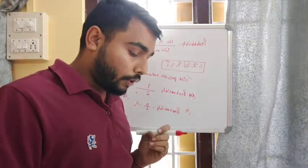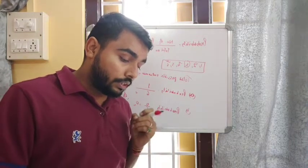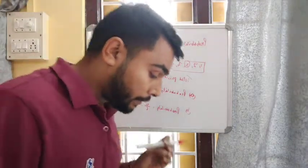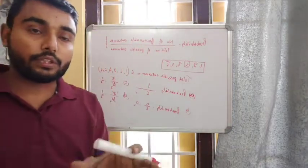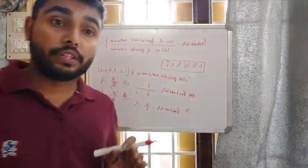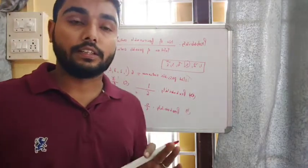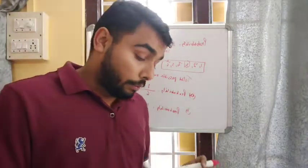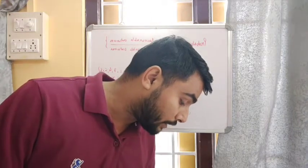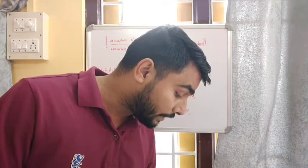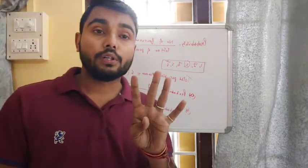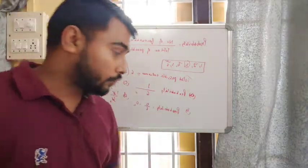Question number two: Ramesh chooses a date at random in April for a party. In April there are 30 days, so out of these 30 days you can select any one. You need to find the probability that he chooses a Saturday. Looking at the calendar, the third, tenth, seventeenth, and twenty-fourth are Saturdays — so there are four Saturdays out of 30 days.